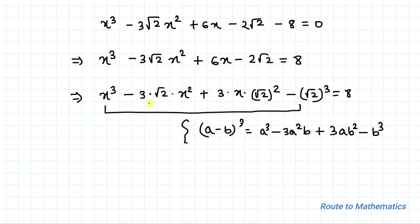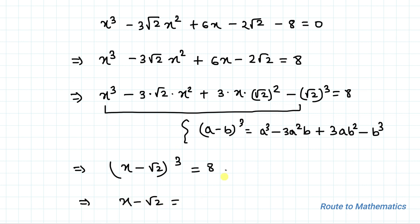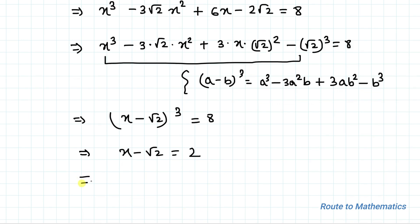Here a = x and b = √2. So the total expression becomes (x - √2)³ = 8. Taking cube root on both sides, x - √2 = 2, since the cube root of 8 is 2. So this implies x = 2 + √2.